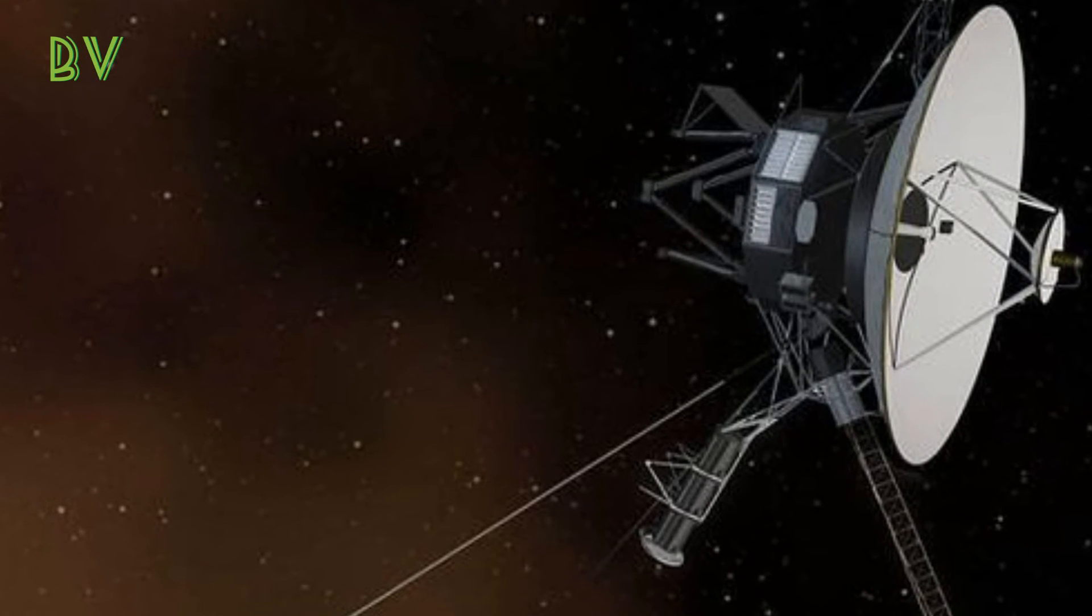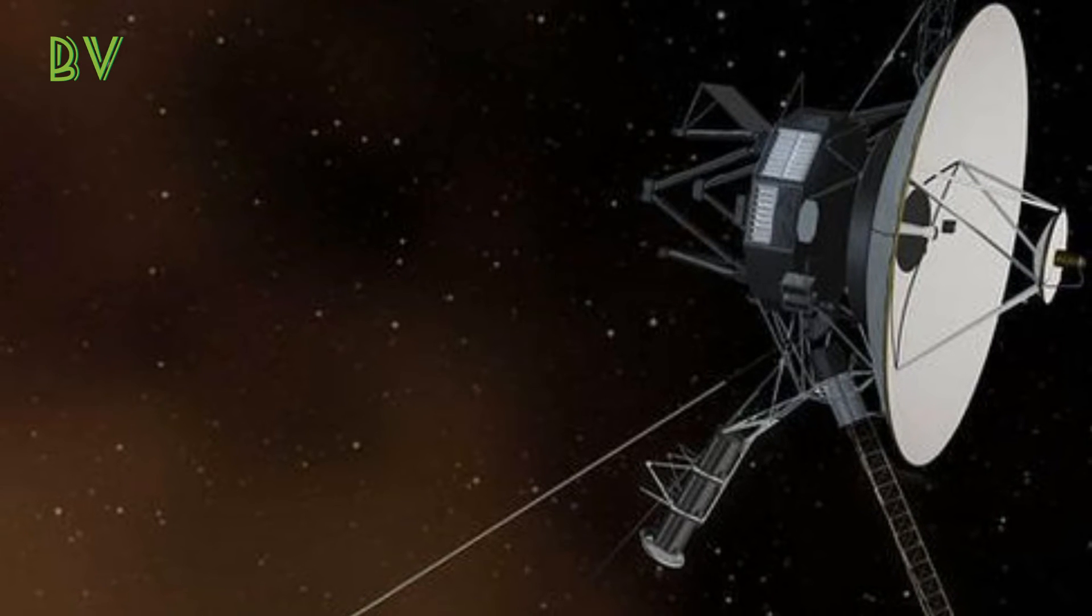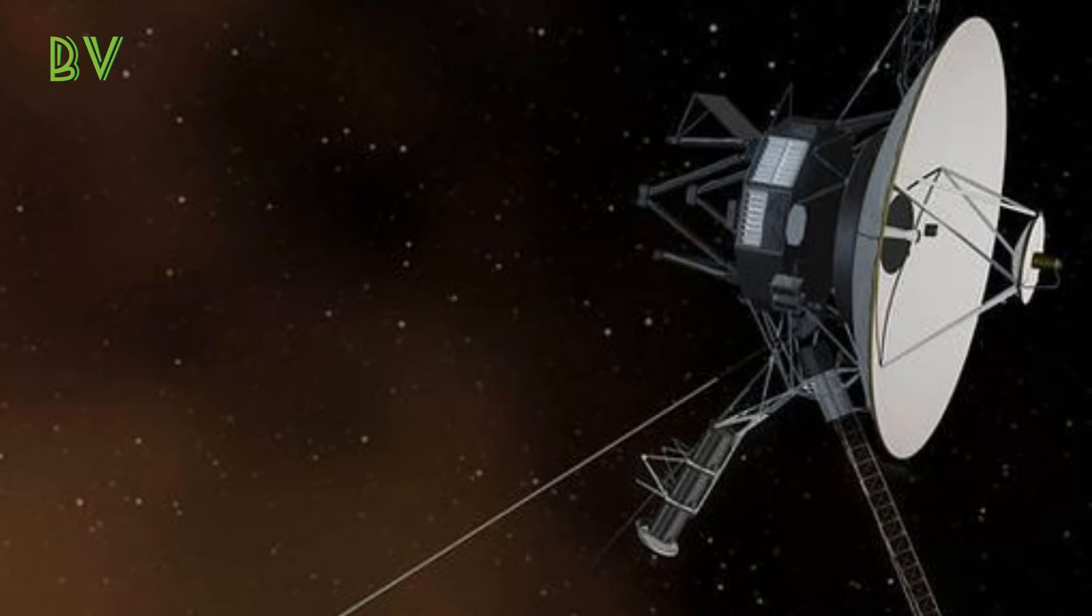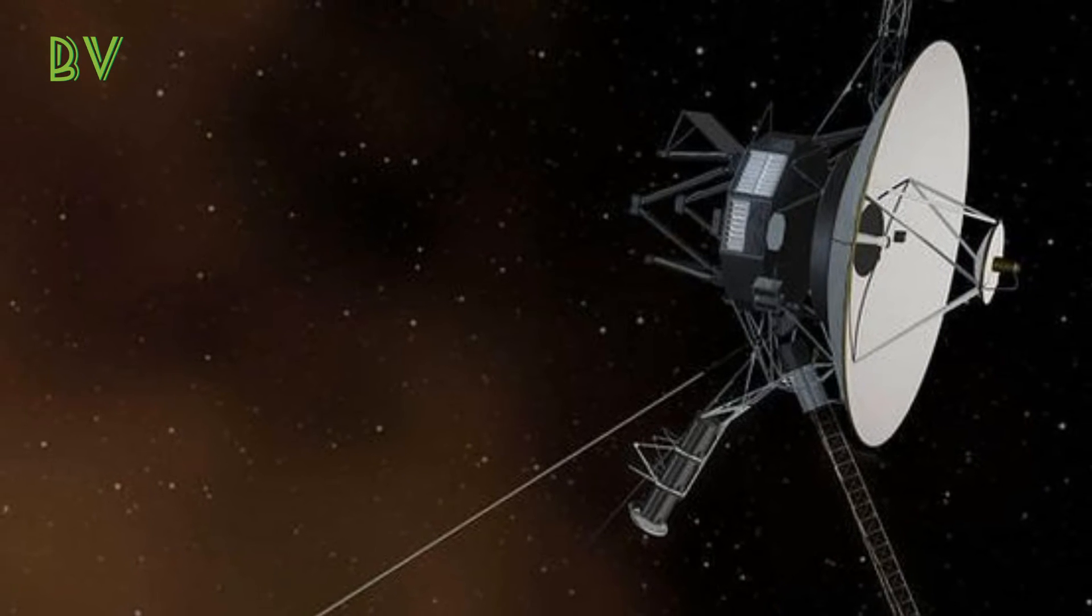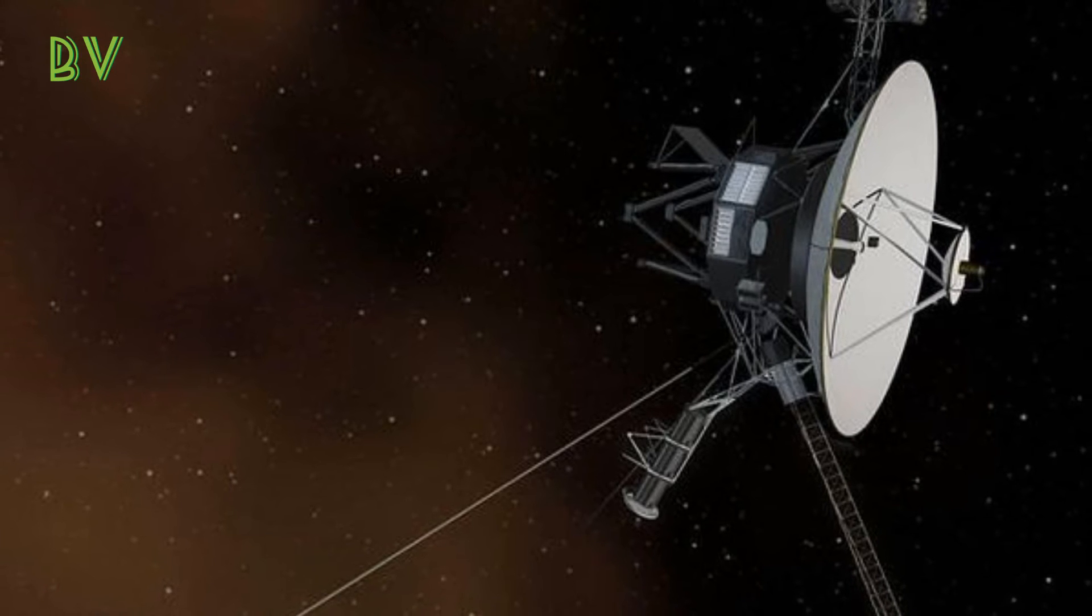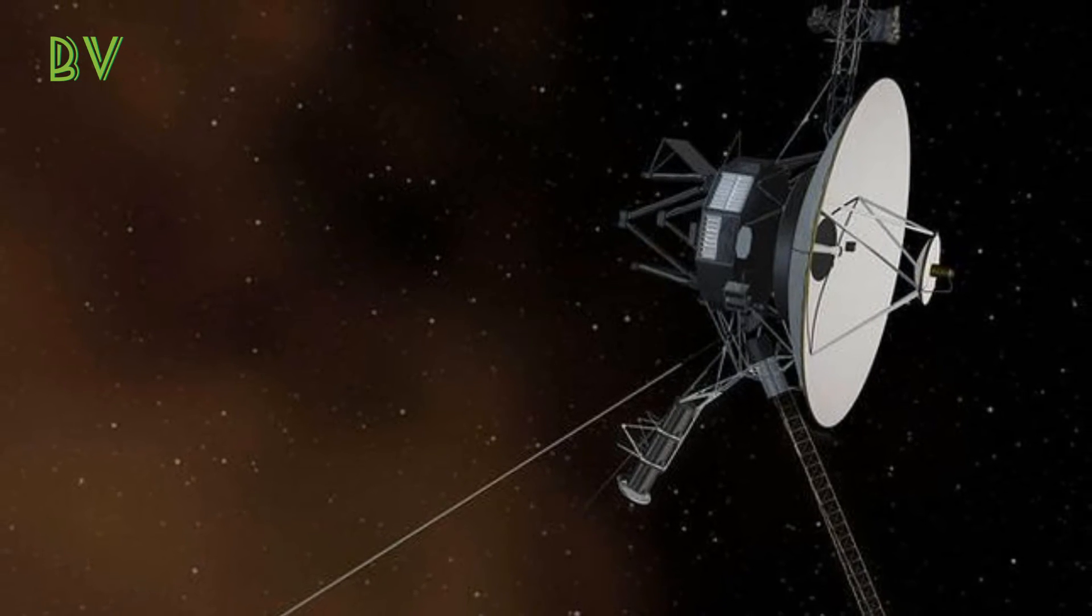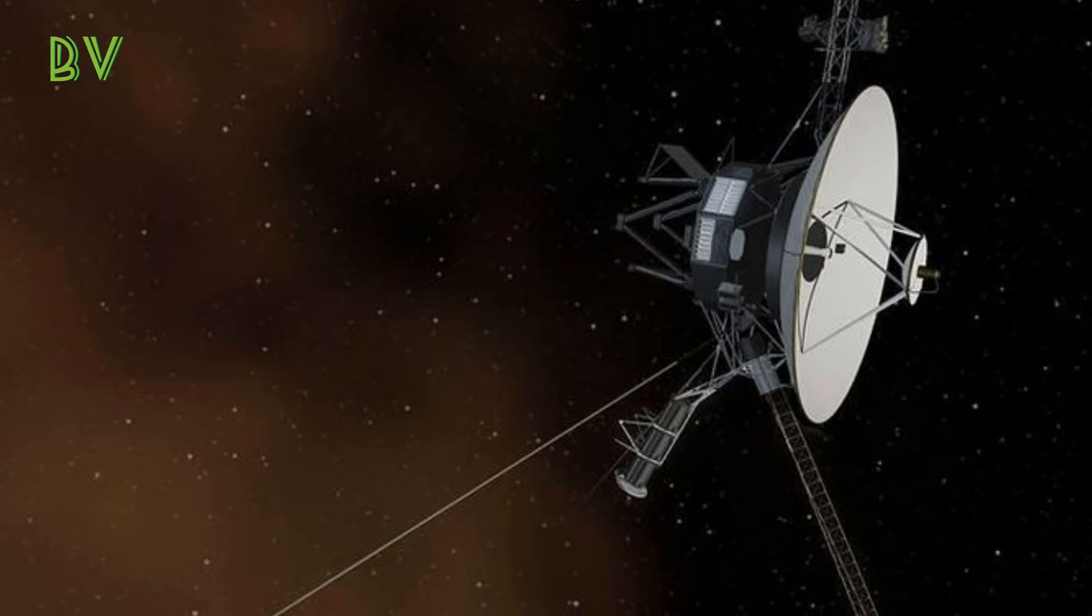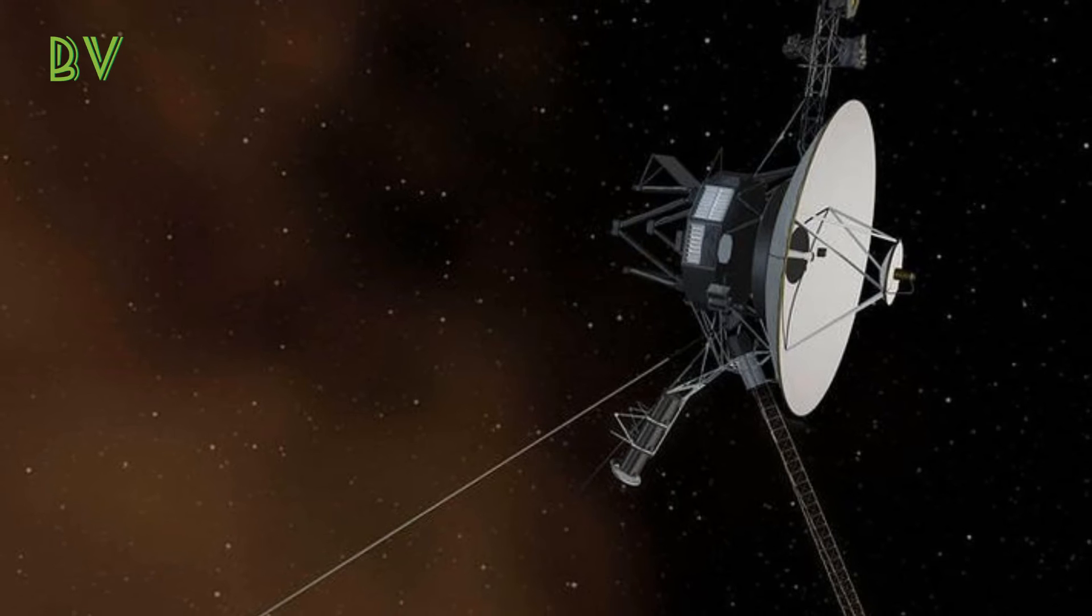Those results, received on Wednesday, showed that the thrusters work perfectly. "The Voyager team got more excited each time with each milestone on the thruster test," JPL propulsion engineer Todd Barber said. "The mood was one of relief, joy, and incredulity after witnessing these well-rested thrusters pick up the baton as if no time had passed at all."